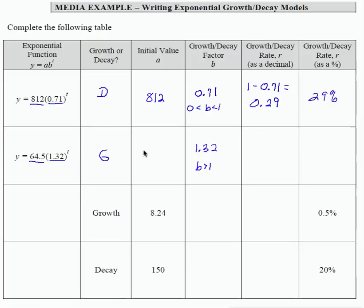My a value is 64.5. To identify the rate of growth, I take the b value and subtract 1. So notice the difference. When I have a growth equation, I take the b value minus 1. When I have a decay equation, I take 1 minus the b value. So here I have 0.32.